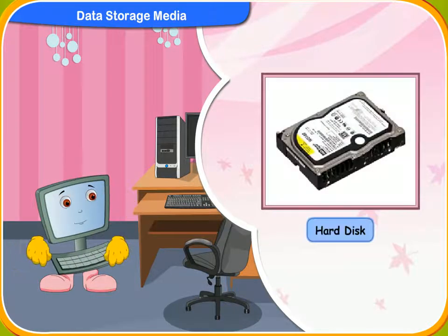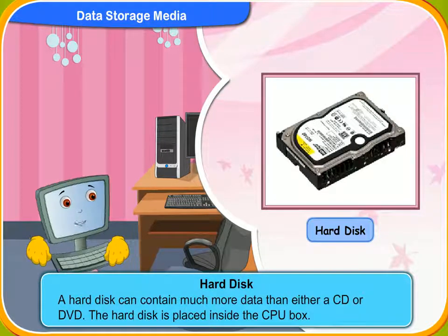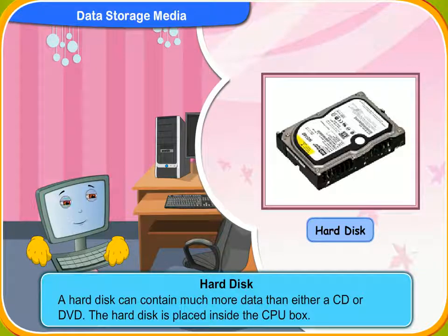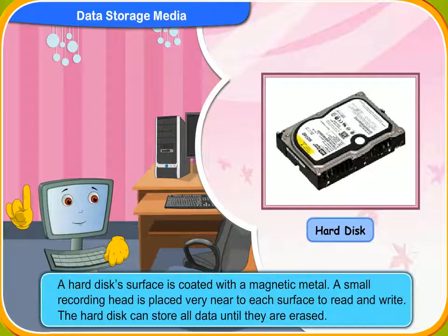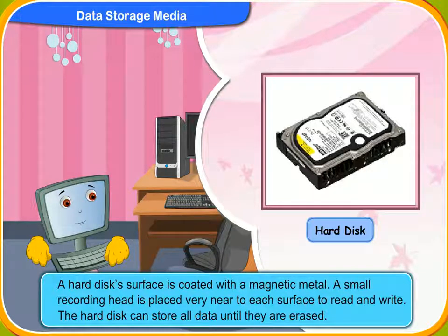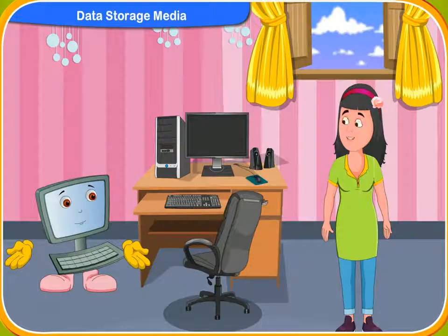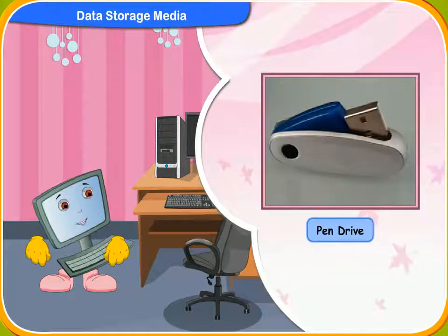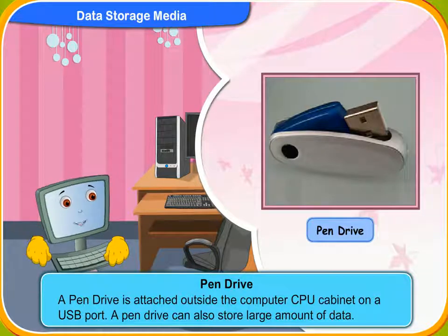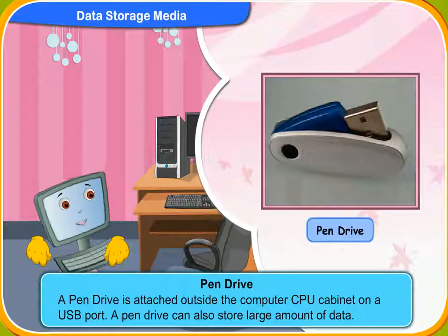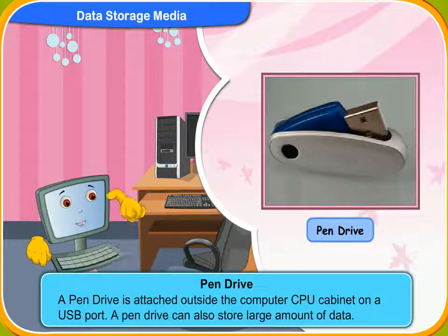Let me tell you about the hard disk now. A hard disk can contain much more data than either a CD or DVD. The hard disk is placed inside the CPU box. Its surface is coated with a magnetic metal. A small recording head is placed very near to each surface to read and write. The hard disk can store all data until they are erased. The pen drive is a pen-like device. It is attached outside the computer's CPU cabinet on a USB port. A pen drive can also store a large amount of data. It is the most convenient device to carry data from one place to another, as we can put it in our pocket.